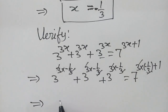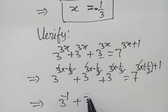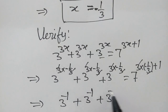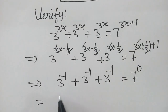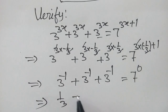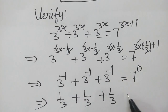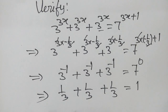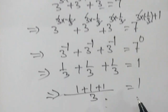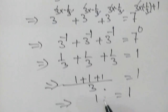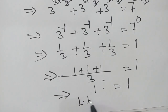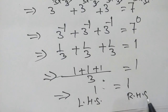Now we have 3 to the power minus 1, or we can say 3 inverse. So 3 inverse is equal to here 7 to the power 0. So 1 over 3 plus 1 over 3 plus 1 over 3 is equal to 1. With LCM 3, 1 plus 1 plus 1 over 3 equals 1, so 1 is equal to 1. Left hand side is equal to right hand side.